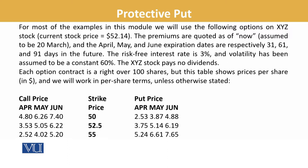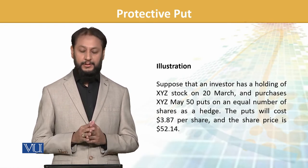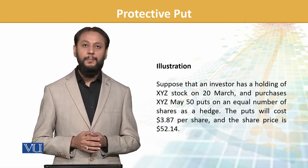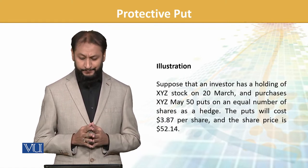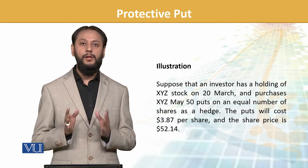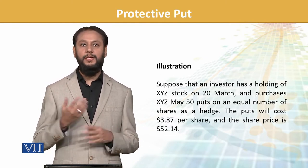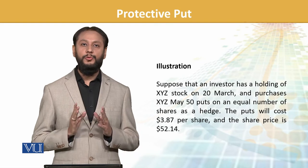This is a table we have talked about in detail. Suppose that an investor has a holding of XYZ stock on 20th April and purchases a May 50 put - May is the month duration and 50 is the strike price - on an equal number of shares.